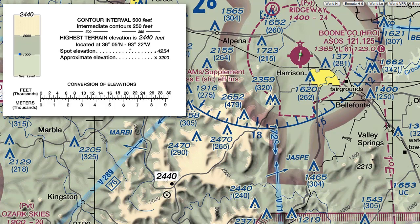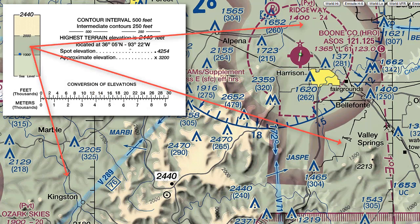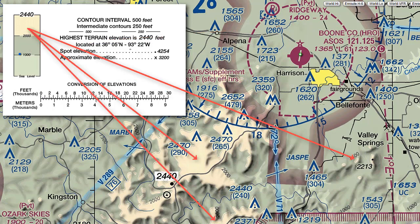To help depict the elevations a little more clearly, each chart uses color for elevation ranges. As we can see here, the lightest green goes from sea level to 1,000 feet MSL. The darker green covers a range from 1,000 to 2,000 feet MSL. And then the lighter tan color goes from 2,000 up to 2,440 feet MSL.